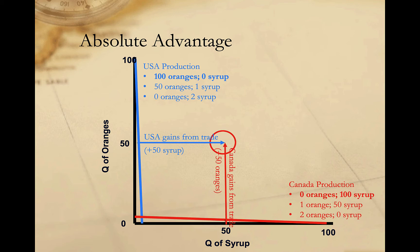Absolute advantage can exist for a number of reasons, including climate — as the US oranges and Canadian syrup example suggests — as well as access to raw materials, specific labor conditions, or a host of other factors. The key takeaway is that absolute advantage suggests that positive-sum games are possible. Indeed, the recognition of absolute advantage was central to Adam Smith's rejection of mercantilism and the embrace of free trade.